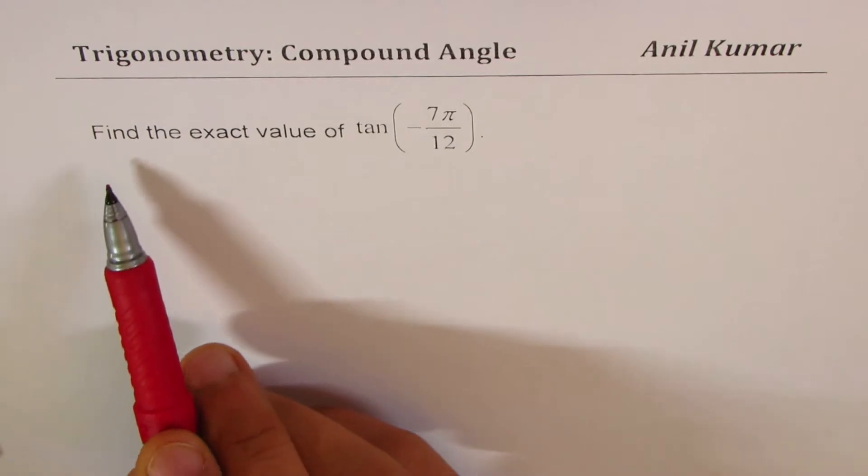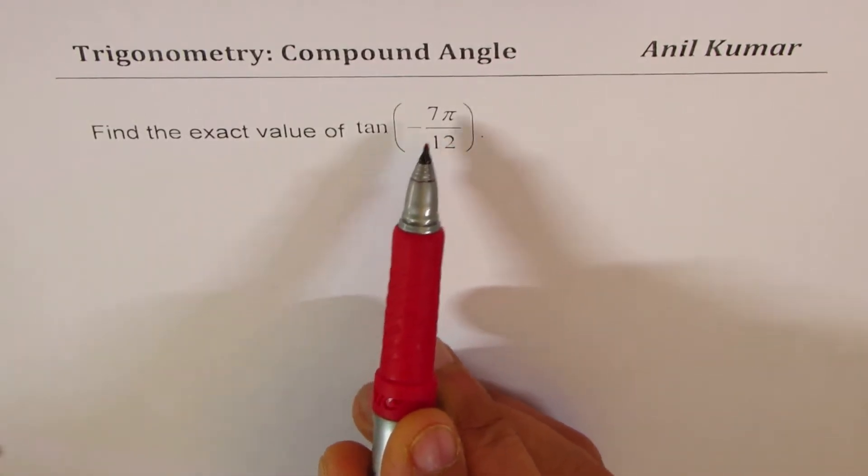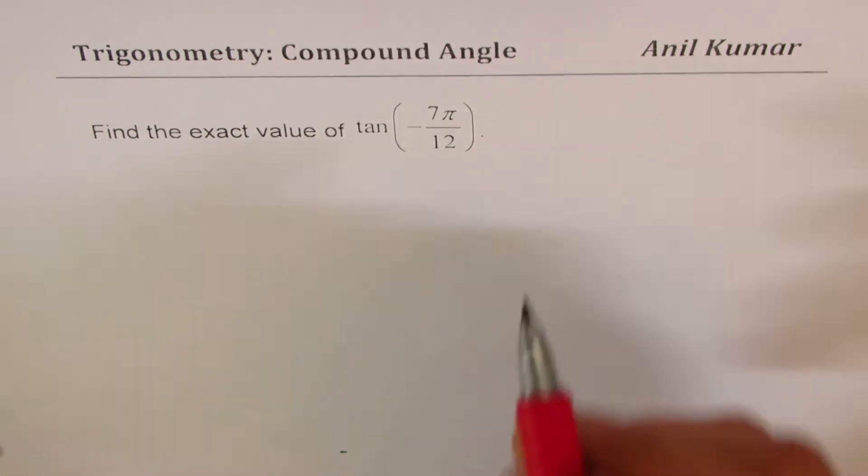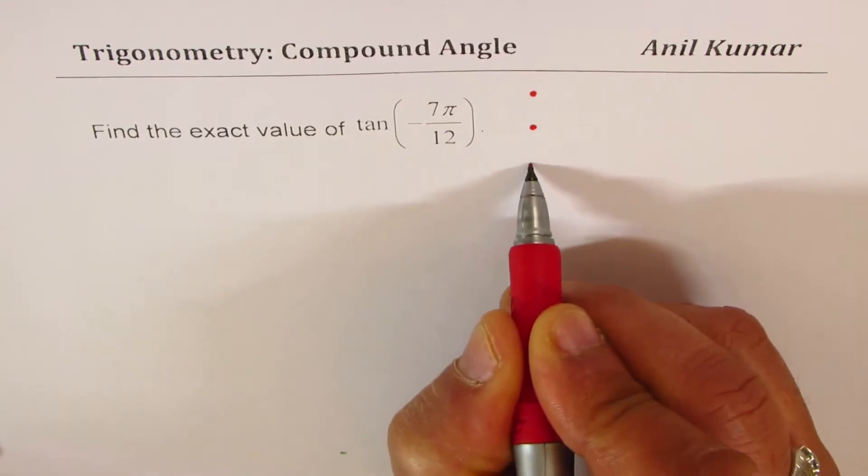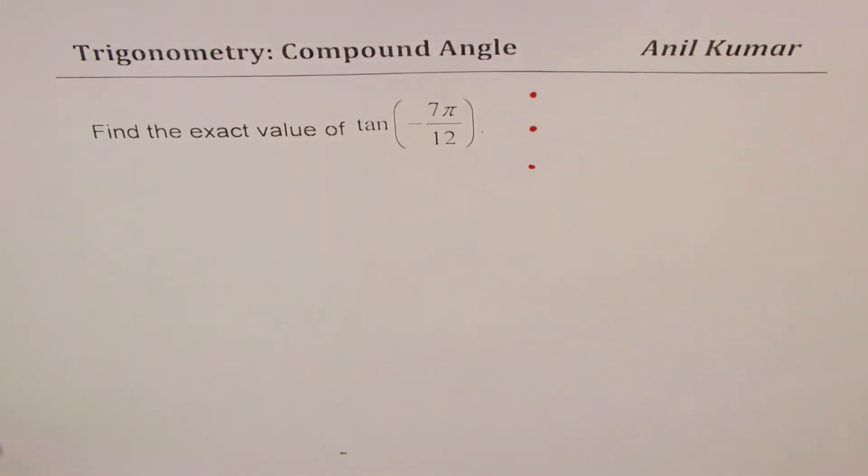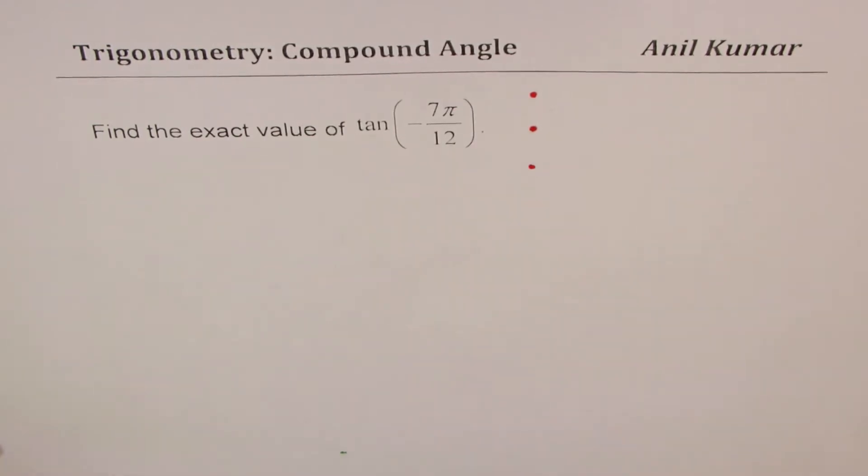The question is, find the exact value of tan(-7π/12). Now, any question like this, you need to understand a few things. Let me mark those things first, and then we'll see how to incorporate these to get the solution.